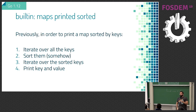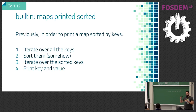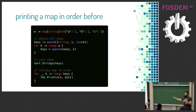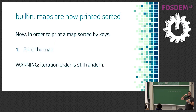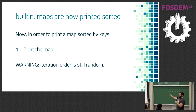If you print maps, they will be sorted. Don't get too excited — it's not as cool as it sounds. Previously to print a map sorted, you had to iterate over all the keys, put them in a slice, sort the slice, then look up each value. Now you can just print the map. But this is only for printing — if you iterate over a map, the order is still random. The reason we did this is for tests: you can now compare whether two printed maps look exactly the same.